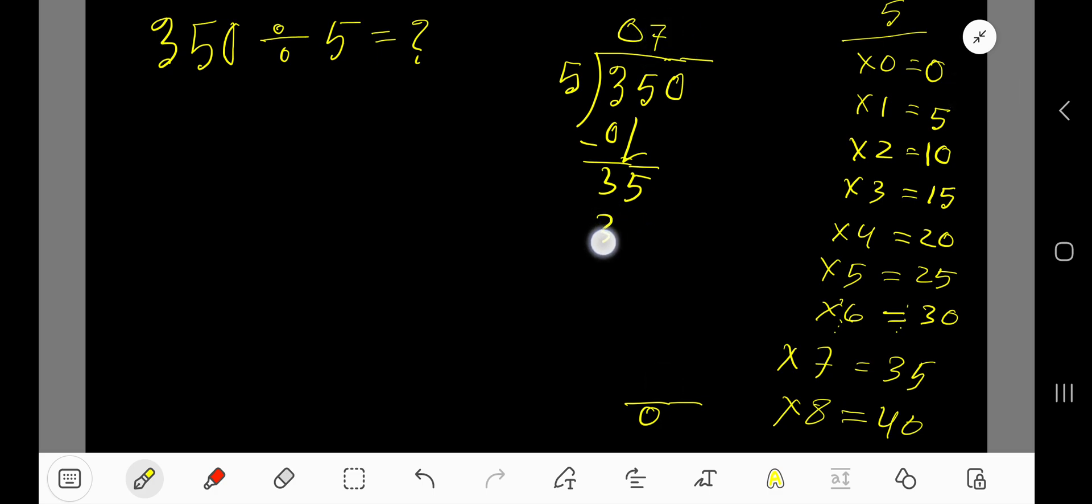7 times 5 is 35, subtract to get 0. Bring down the 0. 5 goes into 0 how many times? Zero times. 0 times 5 is 0, subtract to get 0. As our remainder is 0 and there are no more digits in the dividend, we can conclude.